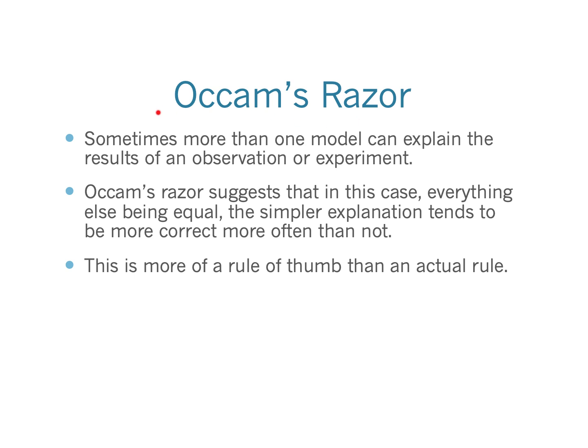There is a rule of thumb that scientists often use called Occam's Razor. If I observe something and come up with a theory to explain it, and someone else comes up with another theory, you determine which is better through the scientific method — experiments and tests. But the rule of thumb of Occam's Razor suggests that of two competing theories, the simpler and more elegant one is probably closer to being correct. It's not always true, but when trying to decide which to test first, the simpler one is more likely to be correct.